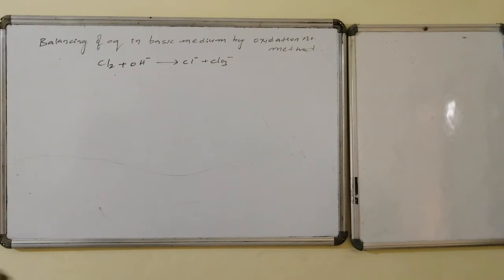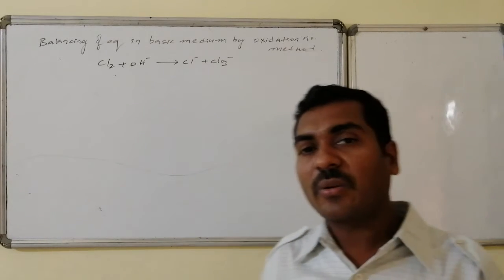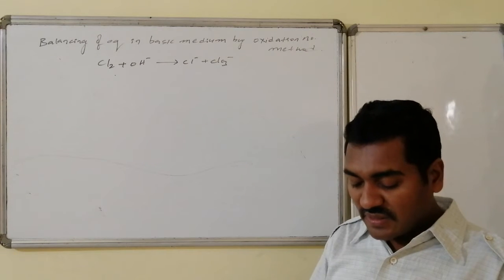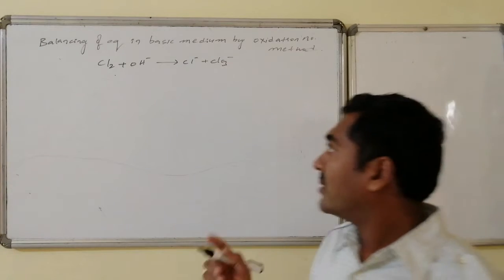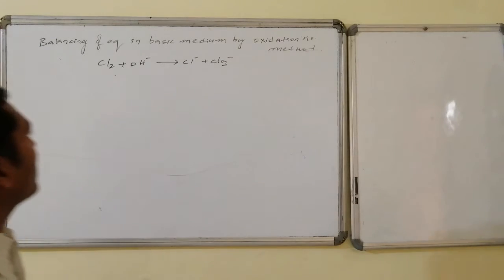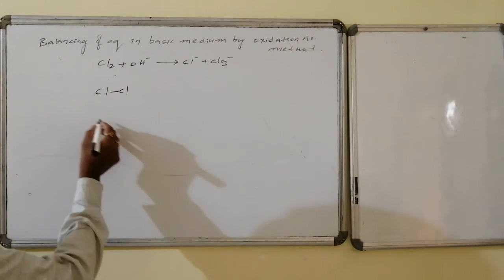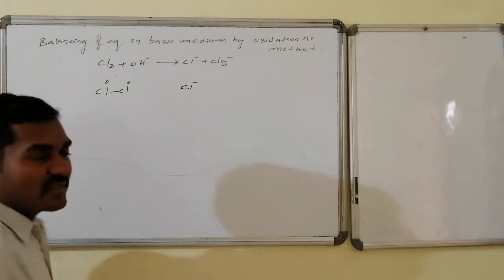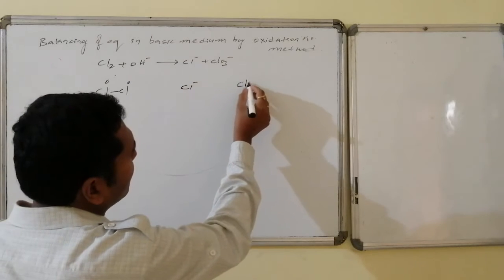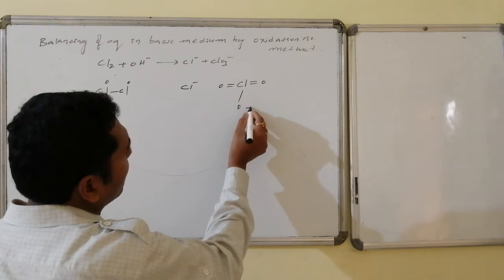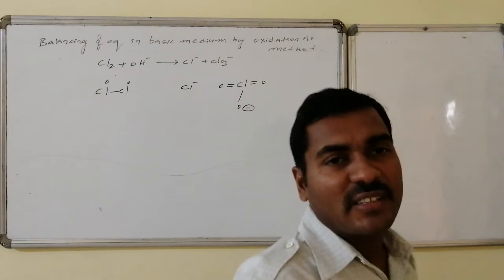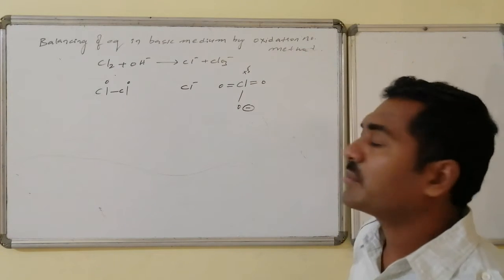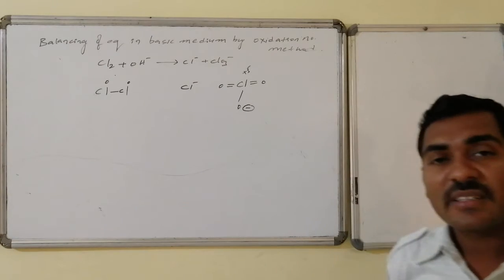The second problem is balancing an equation in basic medium by the oxidation number method. Here, chlorine on reaction with a base is converted to chloride and chlorate. The oxidation number of chlorine in elemental Cl₂ is zero; in chloride (Cl⁻) it is minus one; and in chlorate (ClO₃⁻), where chlorine is bonded to three oxygens, the oxidation number of chlorine is plus five.